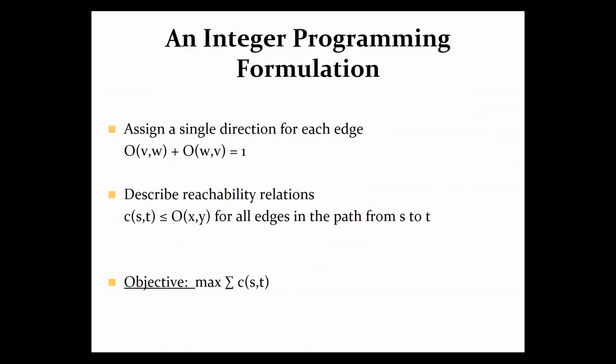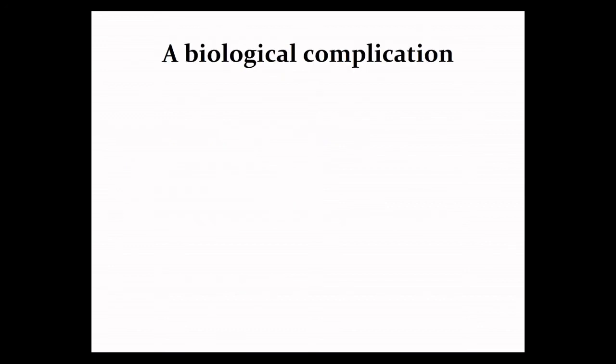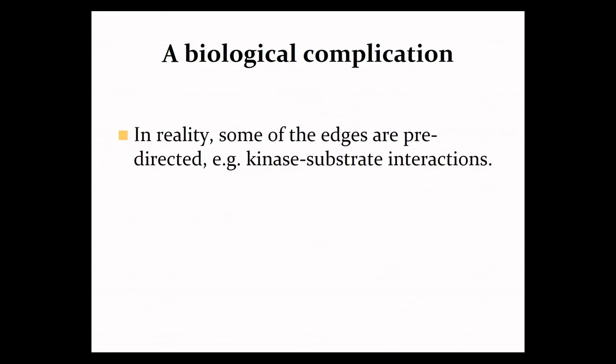Now, so far I completely ignore the biology, but there are some biological constraints that we have to take into account when coming up with our algorithm. And one very important constraint is the fact that some of the edges in our network are pre-directed. It could be because we know the direction, for example, for kinase-substrate interactions, we always know that the interaction goes from the kinase to the substrate. It could be because this is curated information. Now, this means that the input graph is not simply an undirected graph, but it's actually a mixed graph. So it contains both directed and undirected edges.